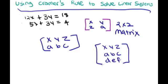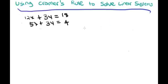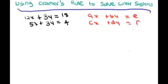First, we compare our system to the general form: ax plus by equals e, and cx plus dy equals f. All we did was take out the constants and plug in variables for the coefficients. So 12 is a, 3 is b, 18 is e, 5 is c, 3 is d, and 4 is f.